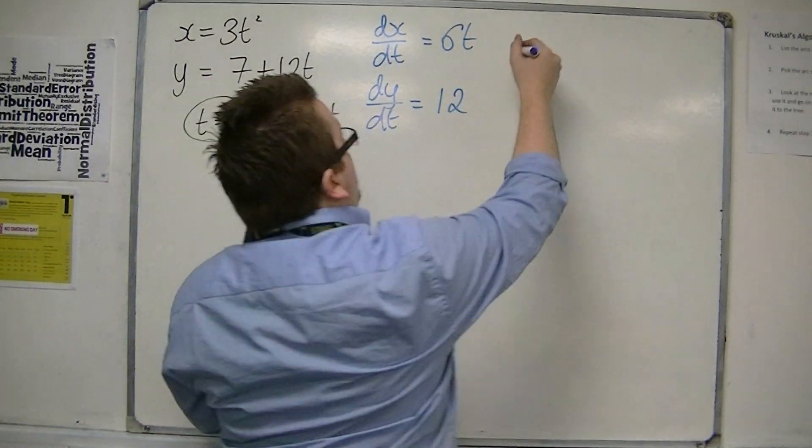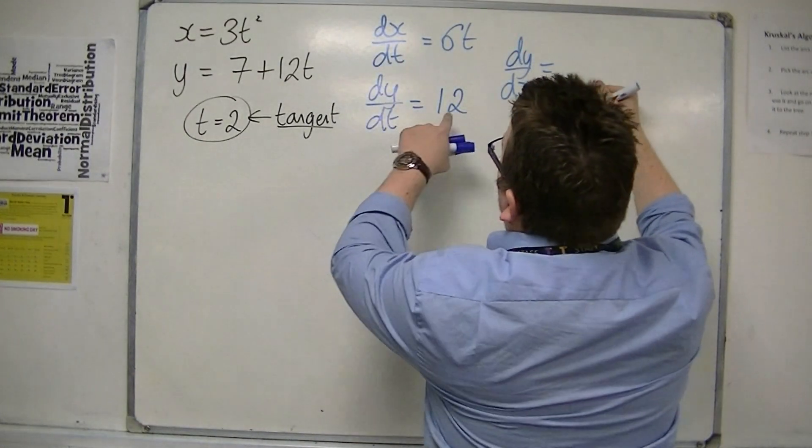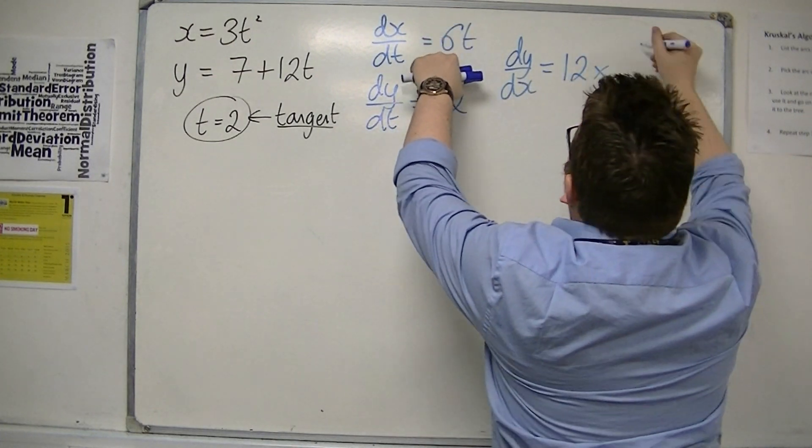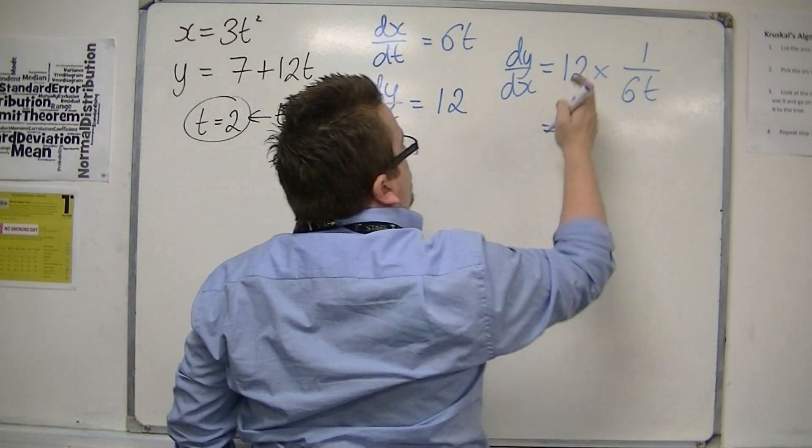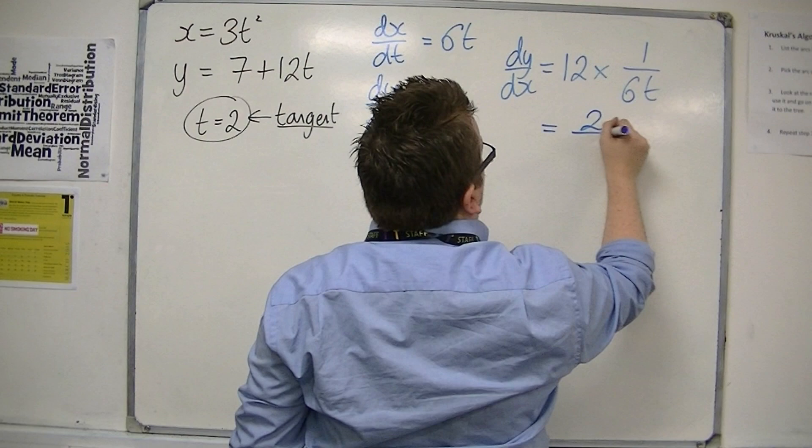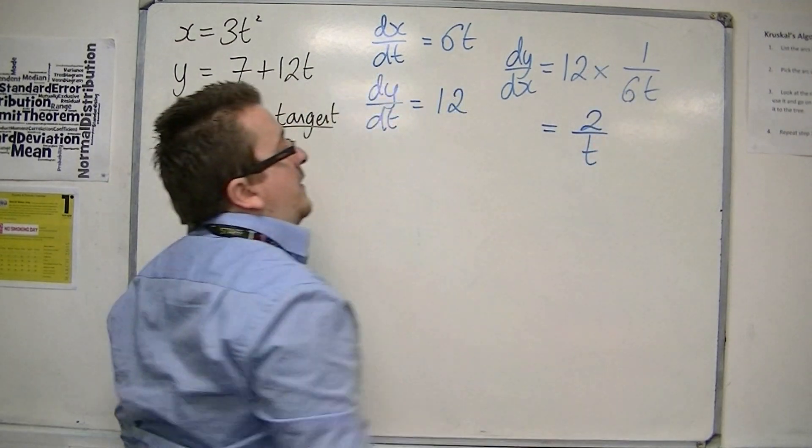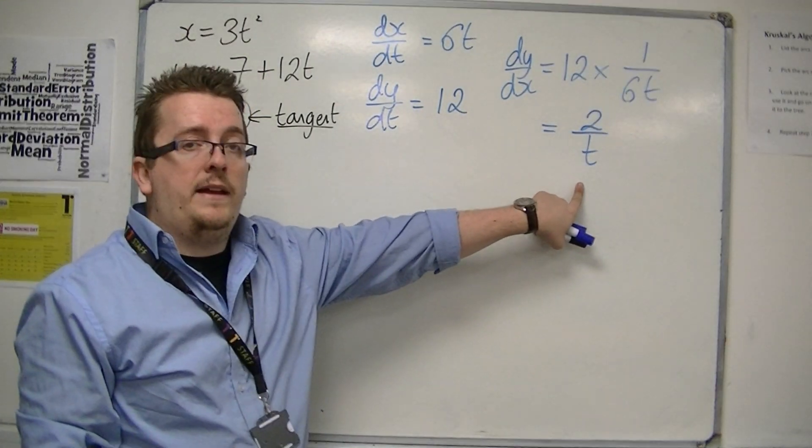So dy by dx is equal to dy by dt times by 1 over dx by dt. So 12 lots of 1 over 6t is 2 over t. The 12 and the 6 cancel each other down to 2 over 1. So this is dy by dx.